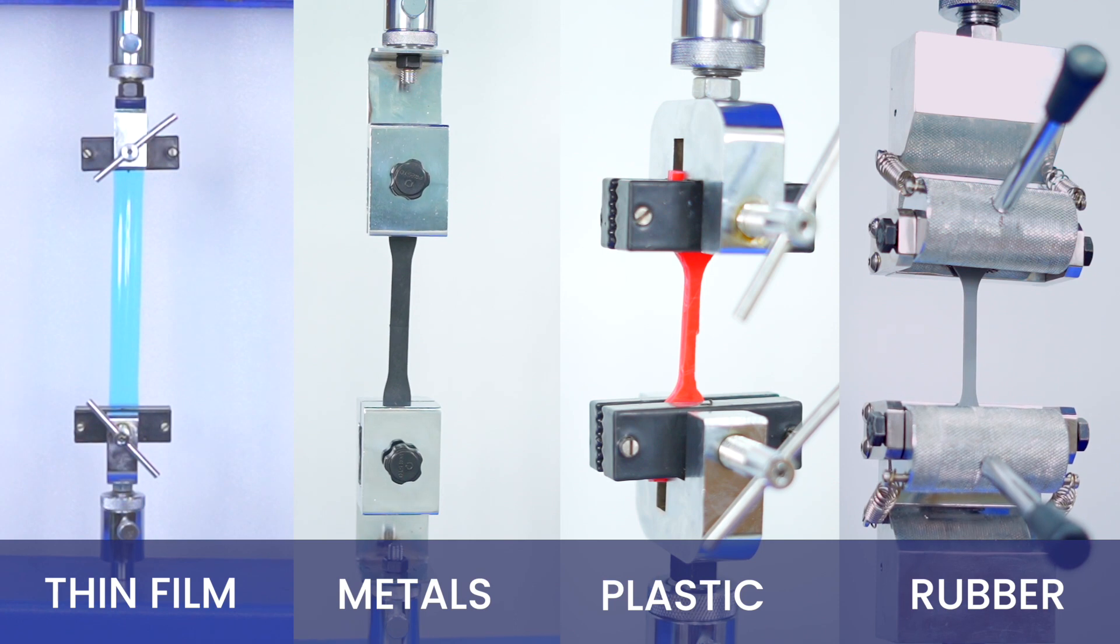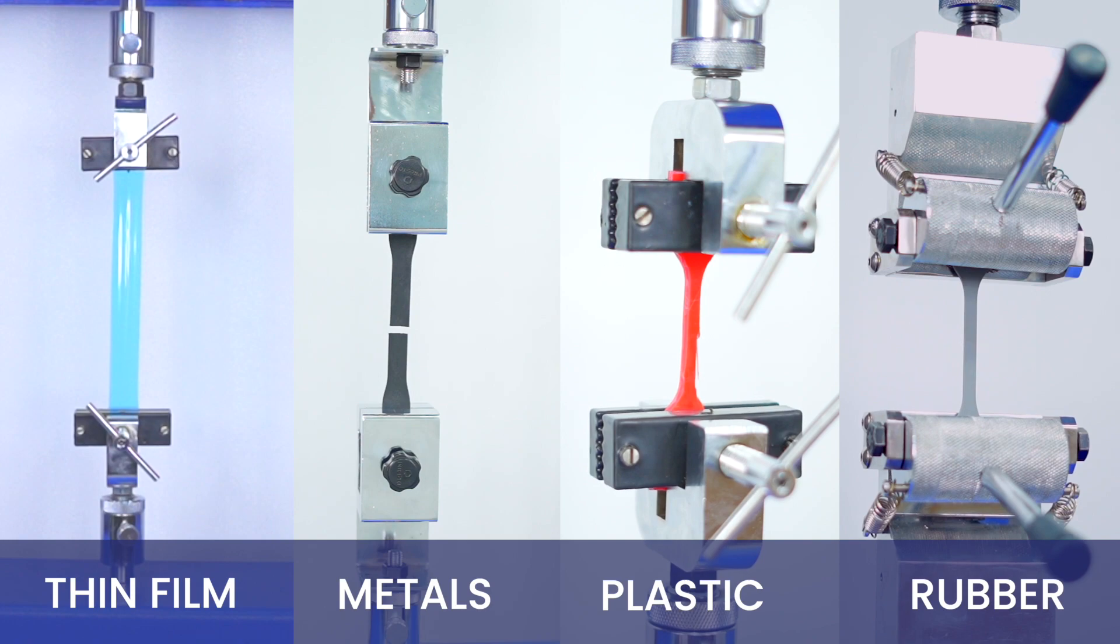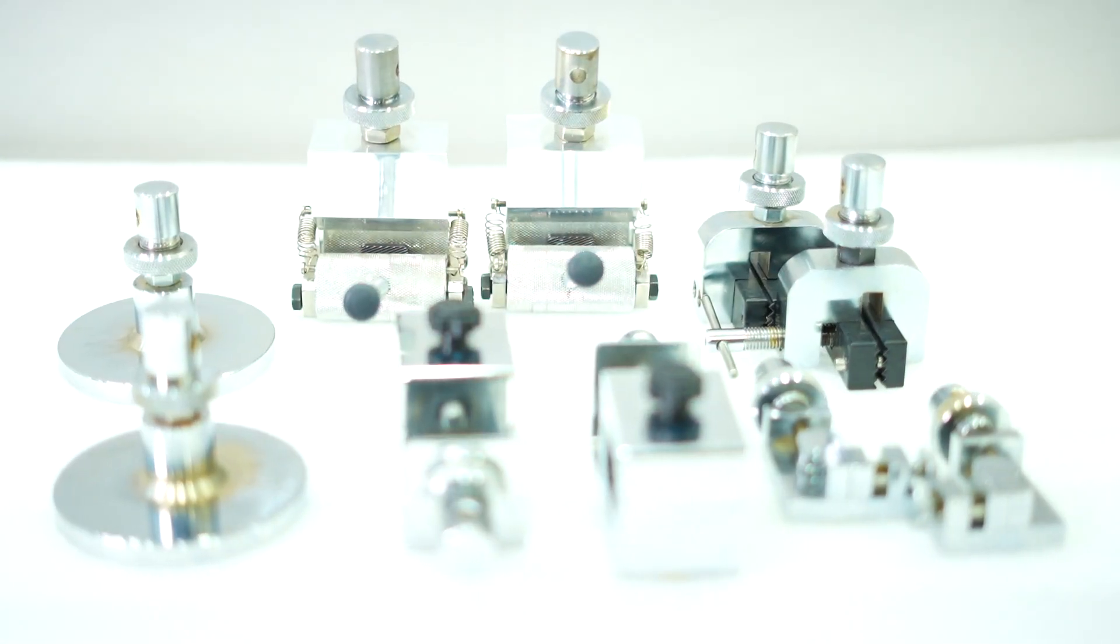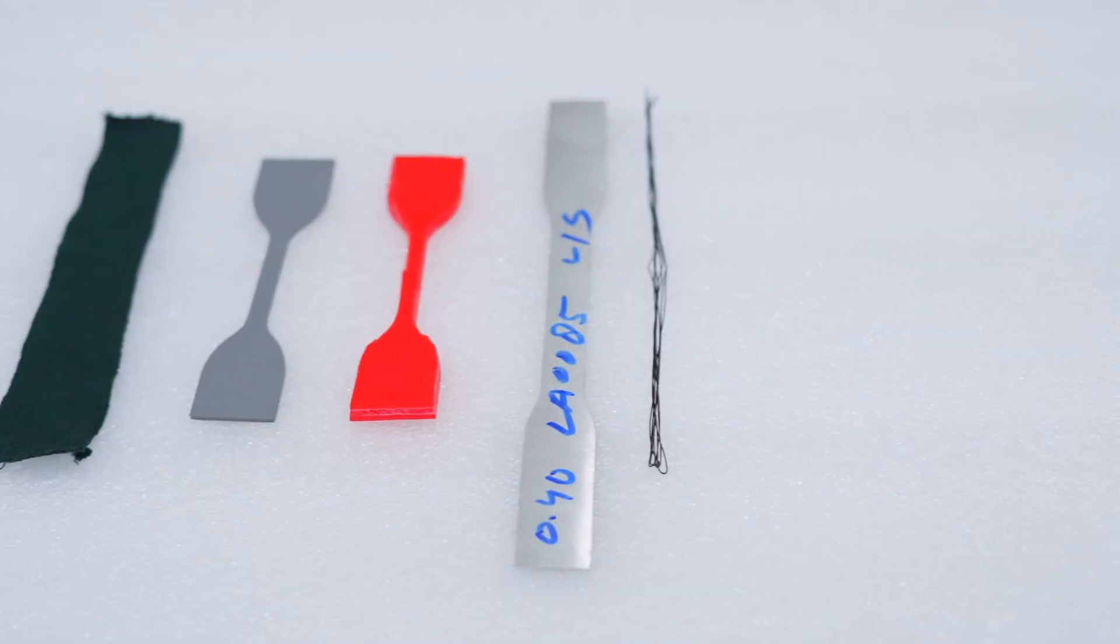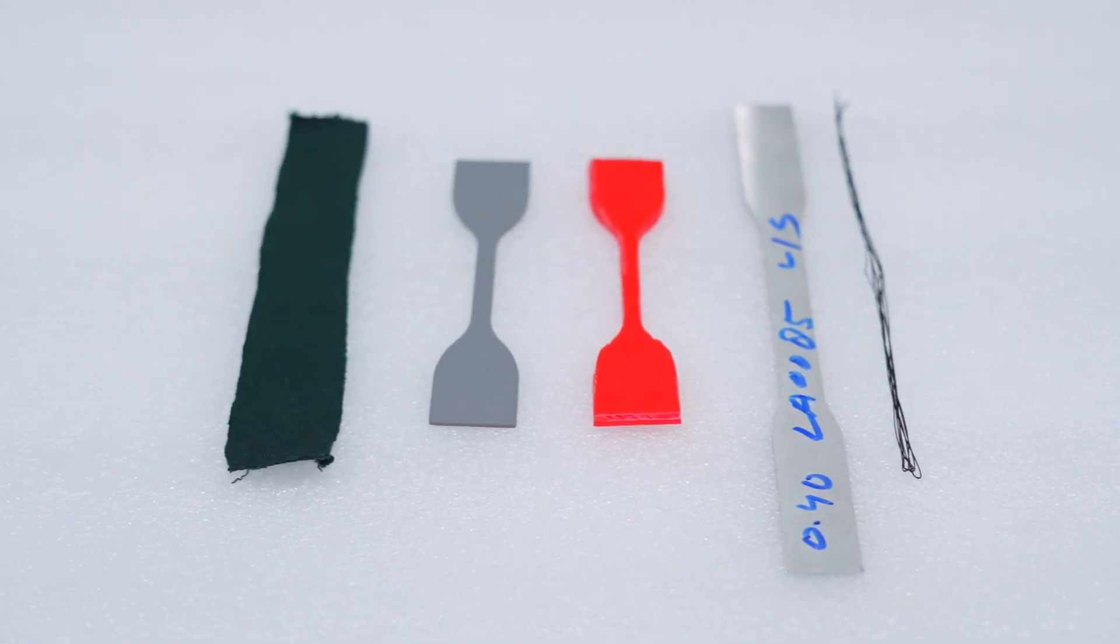Commonly tested materials in this universal tensile testing machine include thin films, metals, plastics, rubber, and more. The tensile tests can be conducted using different types of grips, fixtures, and accessories. These accessories are designed to accommodate easy tensile testing on different types of samples.